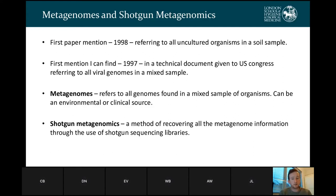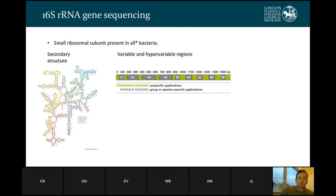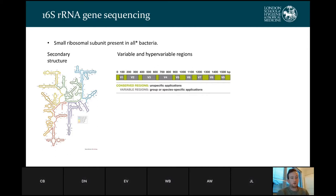Metagenomes refers to all genomes found in a mixed sample of organisms — this can be environmental or from a clinical source. Shotgun metagenomics is the method of recovering all of that metagenome information through shotgun sequencing libraries. What is not technically metagenomics is 16S RNA gene sequencing, as this is only looking at a single gene and not a genome. It is more of a targeted PCR-based approach using the small ribosomal subunit present in all bacteria, using the hypervariable and conserved regions to design primers that help tell apart different bacteria.